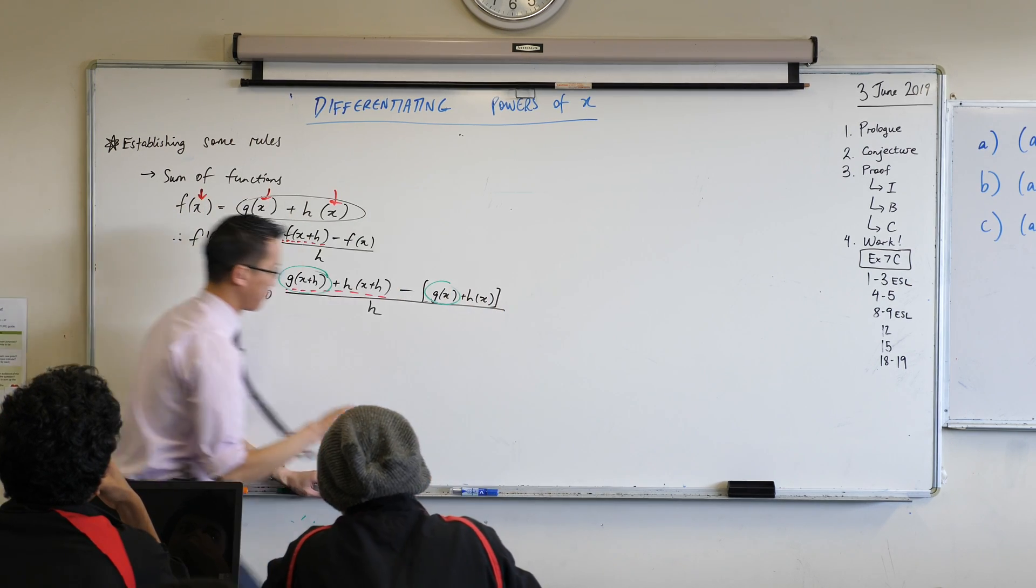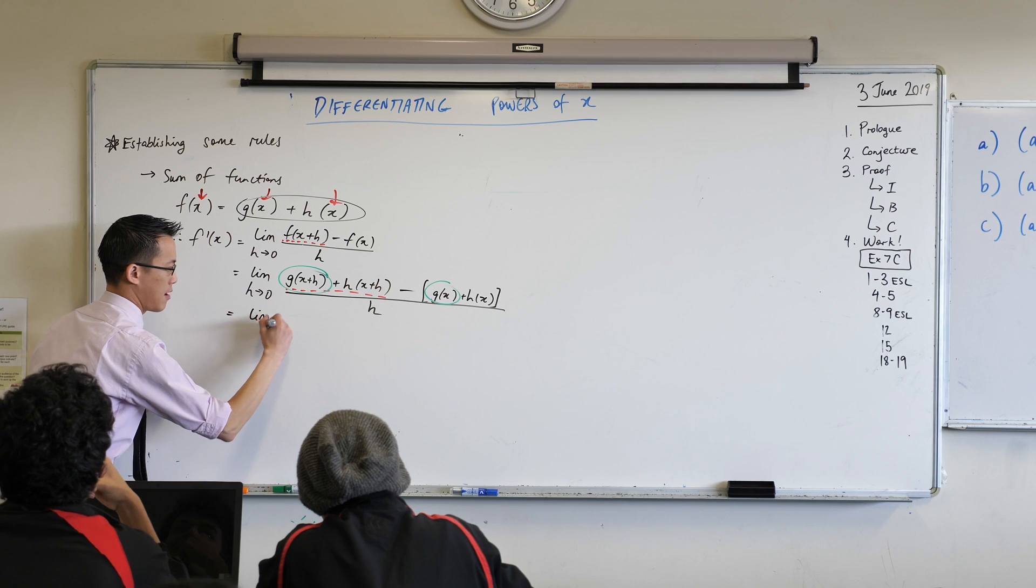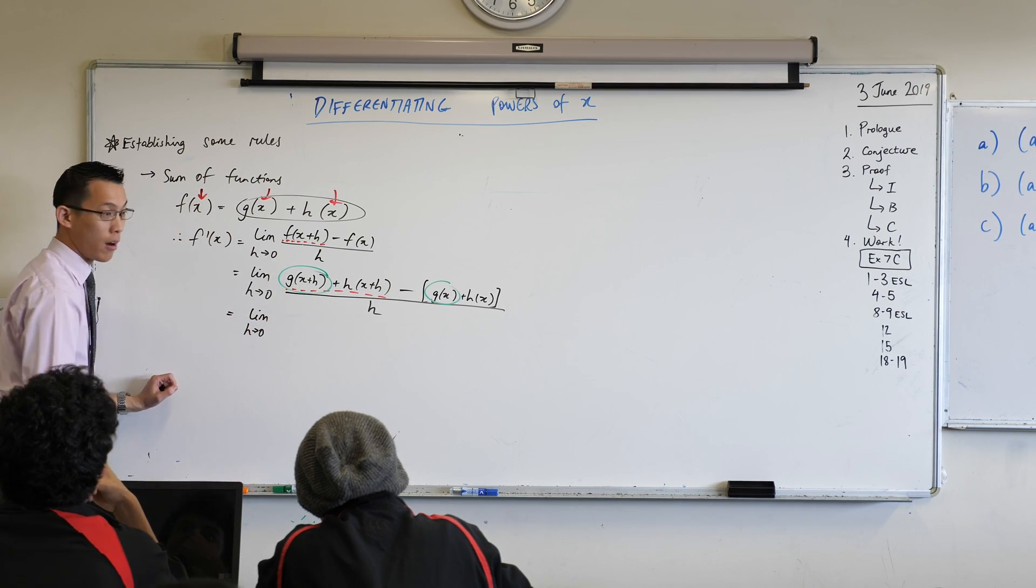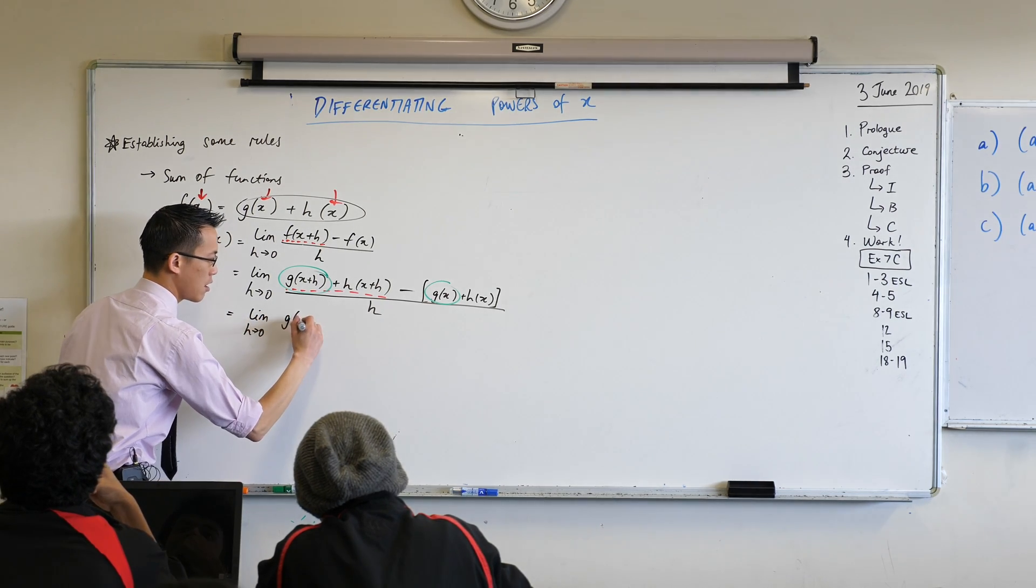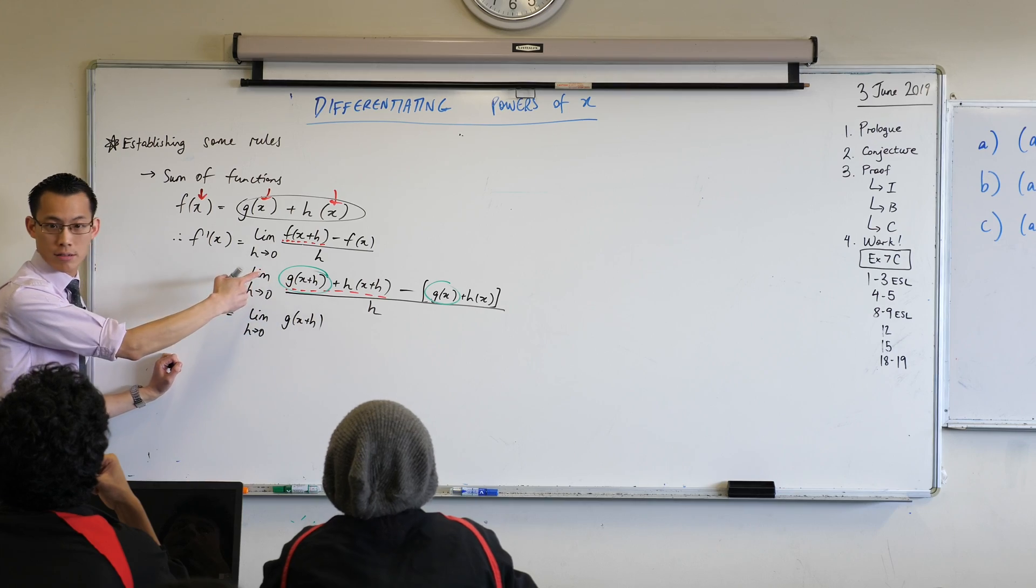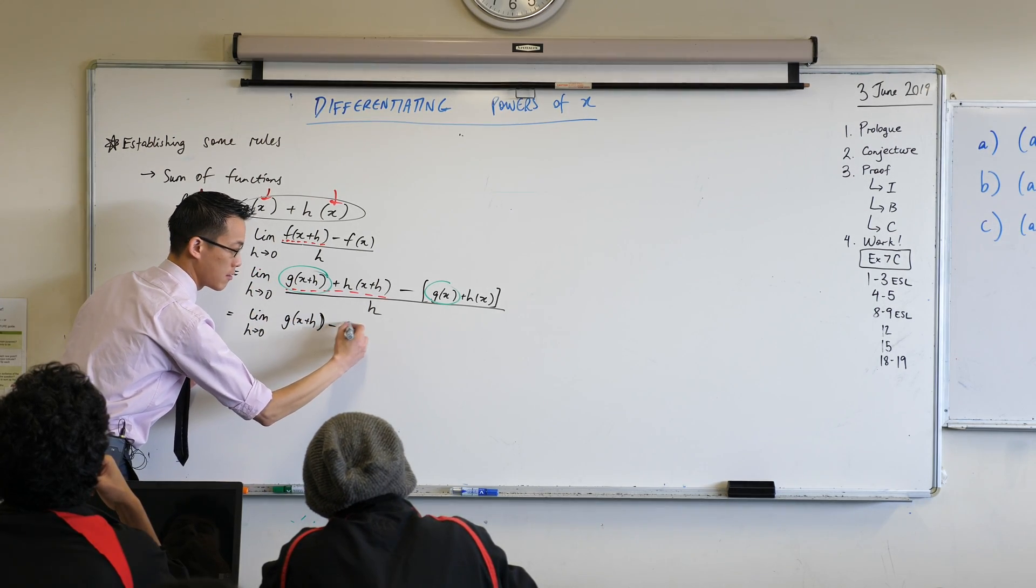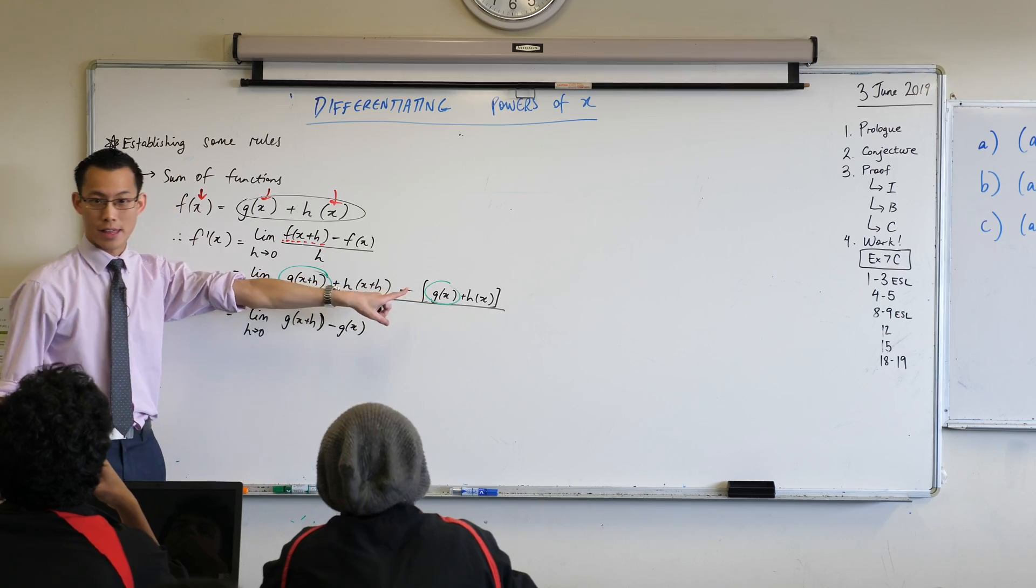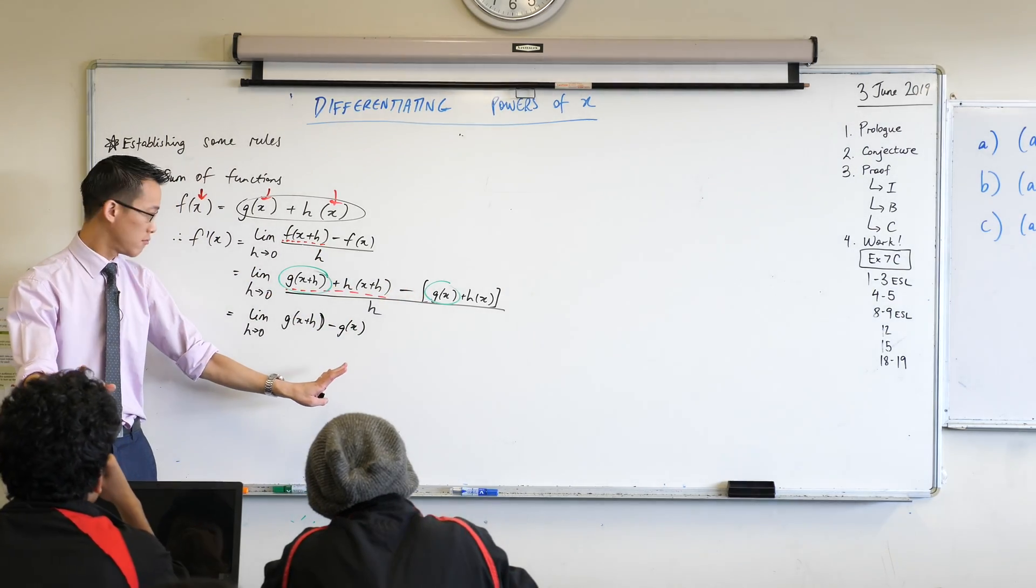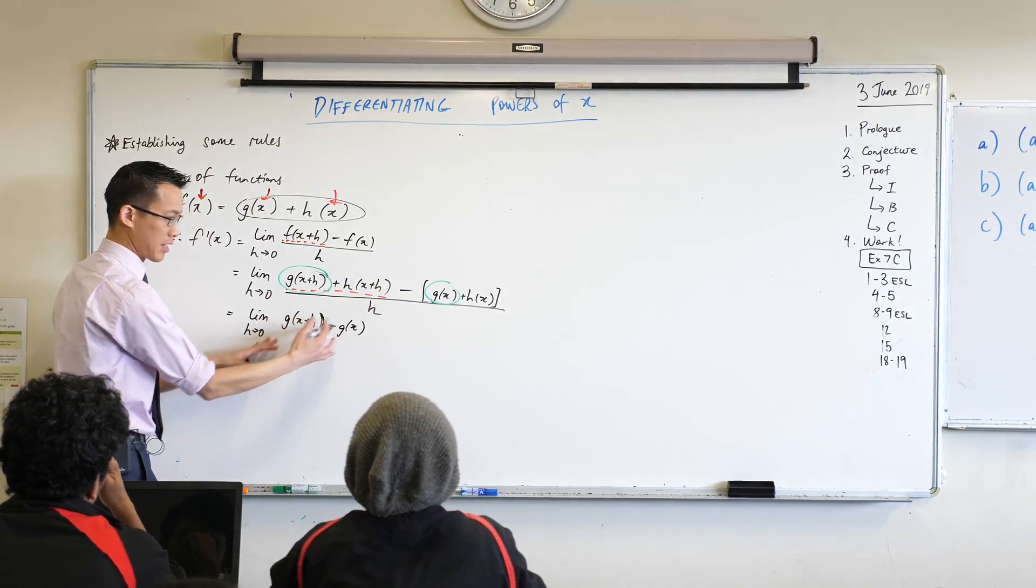So here is this function of g and this function of g. Let's just write those two and put them together beside each other. We can see them a little more clearly. Here we go, limit as h approaches zero of I've got g(x+h), that's the first function g, and then take away g(x), that's what I have from over there. So far so good?